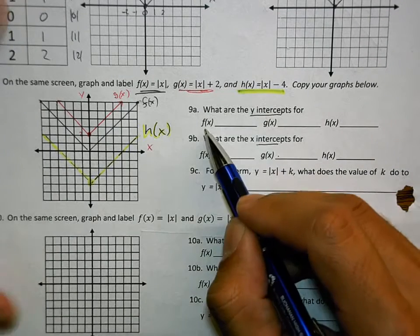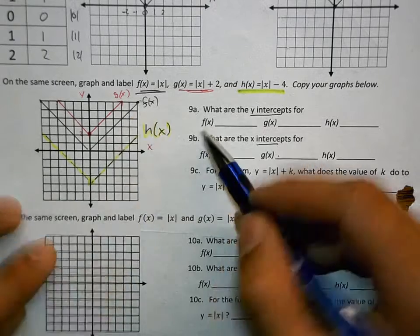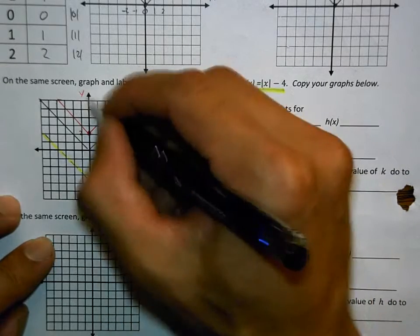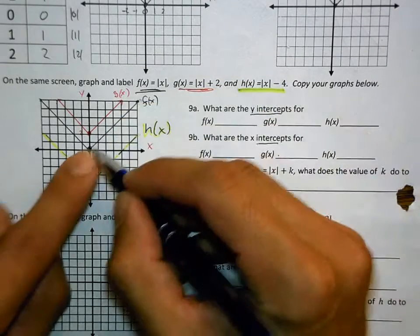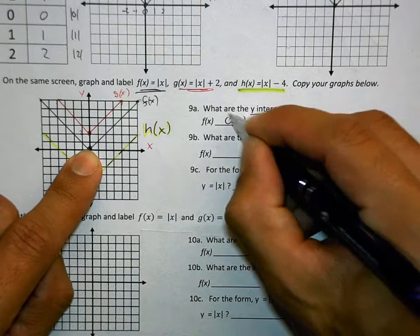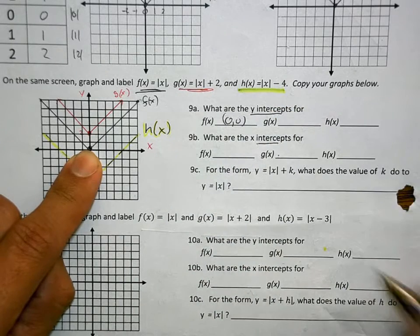What are the y-intercepts for the f of x function? Where does this cross the y-axis? If you said 0, 0, you were right on.